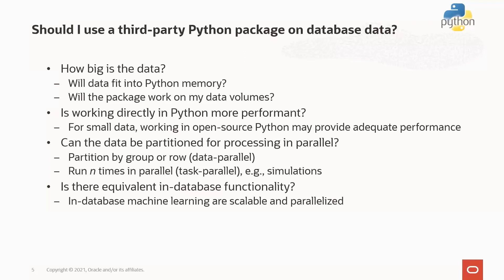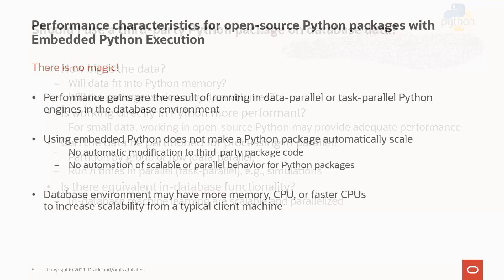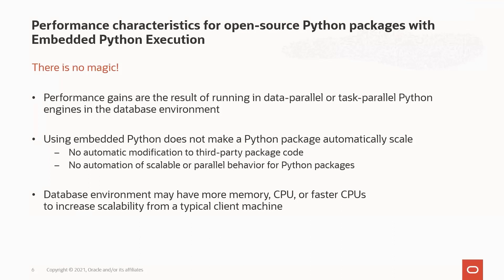This is the heart of today's session. Customers often ask about performance gains when using third-party packages in embedded Python execution. There's no magic here — the gains result from two things: running in data parallel or task parallel Python engines in the database environment, and the greater amount of memory, CPU, or faster CPUs in the database environment compared to your typical client machine. It's important to note that embedded Python execution does not automatically modify third-party code to be scalable or run in parallel.